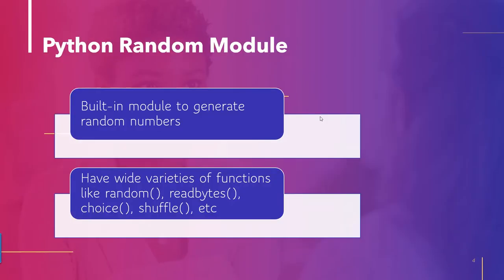Before writing the code, let's discuss the random module, which is used to generate random numbers in this Python Tkinter application. It's a built-in module that comes pre-installed with Python. You can simply import random and it's ready to use. It provides a wide variety of functions — you can generate random numbers in integers and bytes, generate choices, shuffle choices, and more.